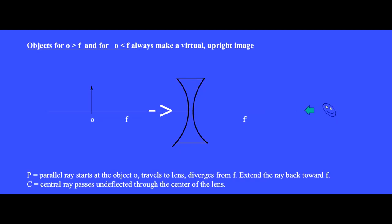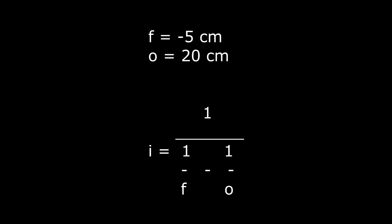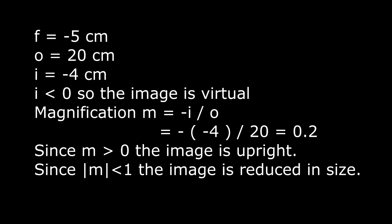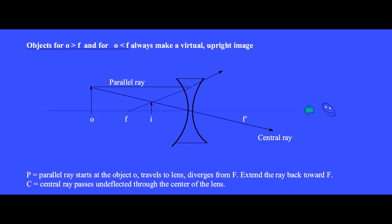Light from the object first strikes this side of the diverging lens. The radius of curvature of this side is on the negative side of the lens. For this reason, the diverging lens has negative values for its radius and for its focal length. For a numerical example, let's say that the diverging lens has a focal length of minus 5 cm and an object is placed 20 cm from the lens. The thin lens equation gives a value of minus 4 cm for the image distance. Since the image distance i is less than 0, we conclude that the image is virtual. The magnification is minus i over o, and here that will be 0.2. Since the magnification is positive, we know that the image is upright. Since the absolute value of the magnification is less than 1, we know that the image is reduced in size, just as the ray diagram had shown.